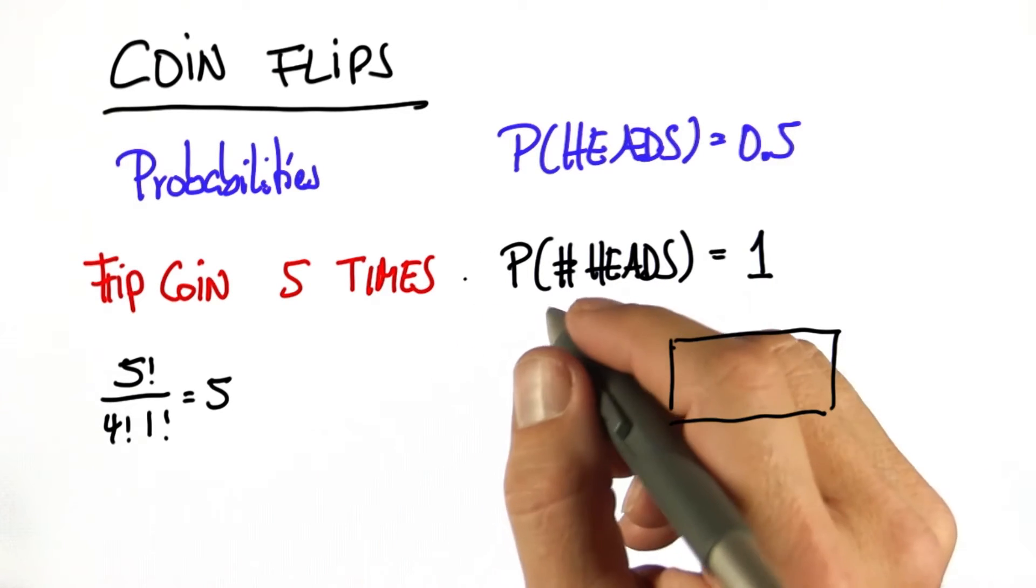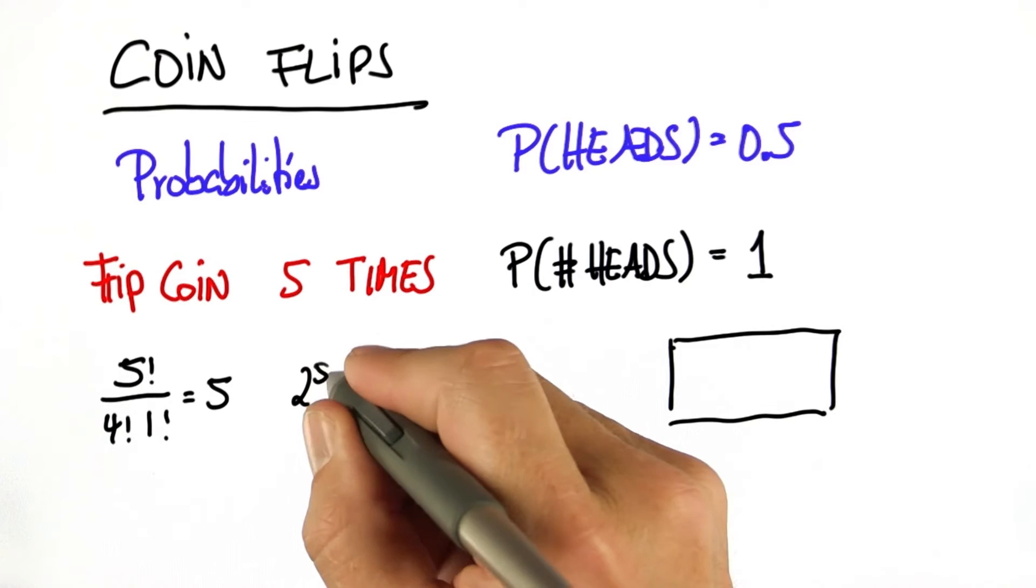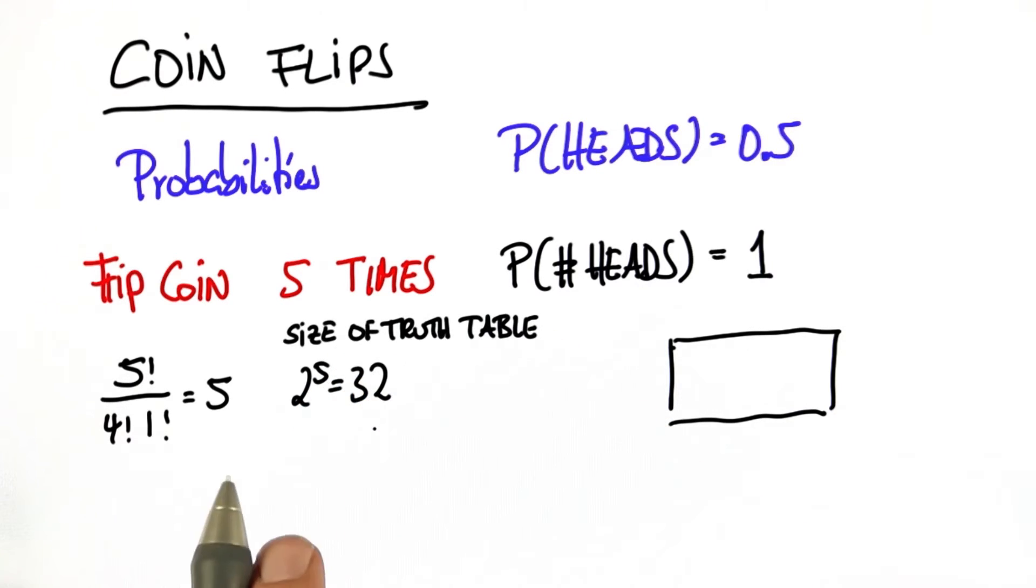We also know that there's 32 possible outcomes. This is 2 to the 5 equals 32 outcomes. This is the size of the truth table.